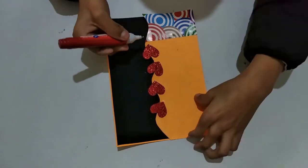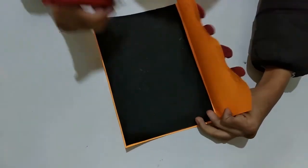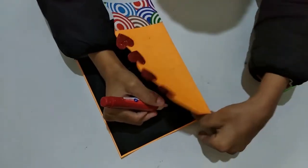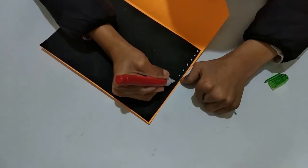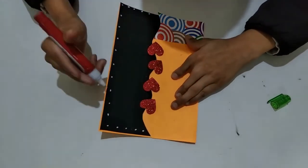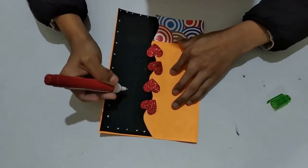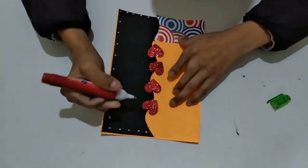Now we have to make dots on the edge of the black paper. Now we have to write Happy Birthday with the help of Whitener.